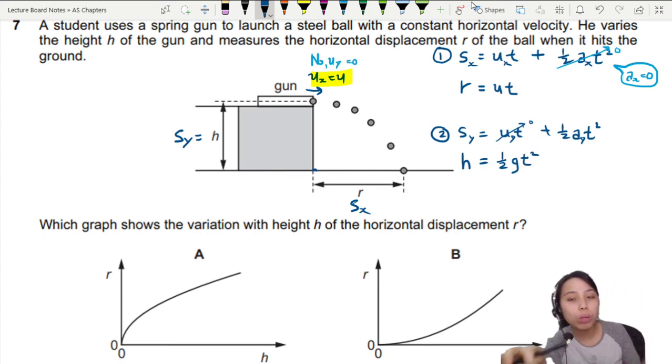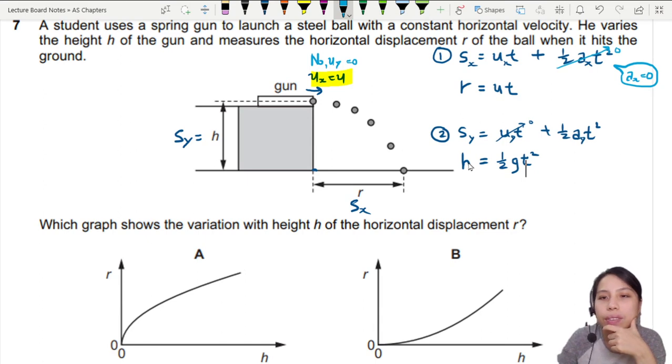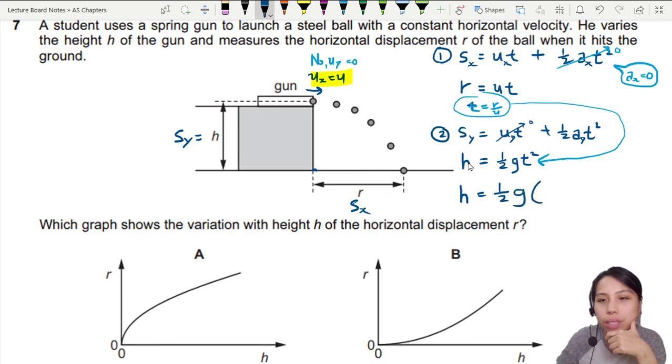We're very close but we're stuck. We have an equation for R, we have an equation for H. We just need to put them together. What I'm going to do is maybe substitute the T inside there. So I'll do one quick rearrangement here. I can rearrange this to be T = R/U. So I take this, I sub it inside here. What do we get at the end? H = 1/2 G and the whole T becomes R over U squared.